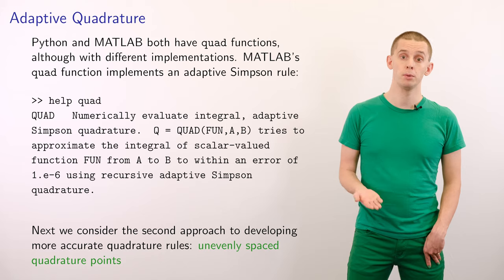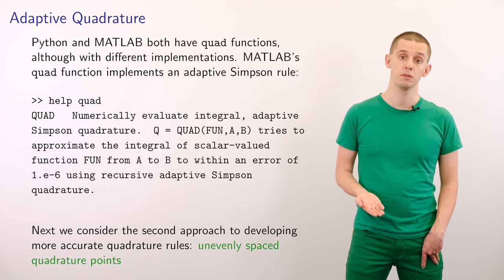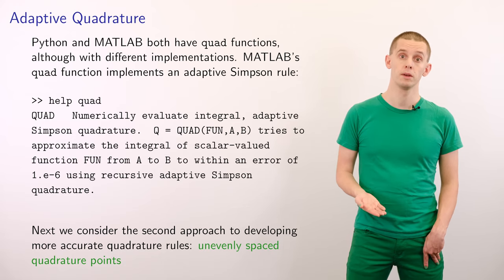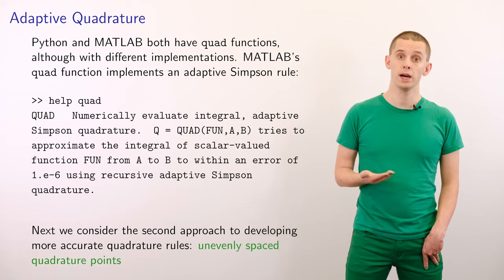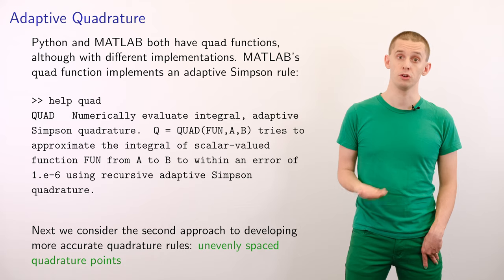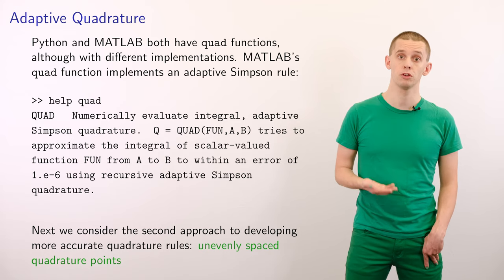Python and MATLAB both have functions called quad that can perform adaptive quadrature calculations using slightly different implementations. MATLAB's quad function uses an adaptive Simpson rule. So now we have an effective set of methods for doing composite quadrature rules, and in the next video we'll look at an alternative approach where we can use unequally spaced points to construct quadrature rules.